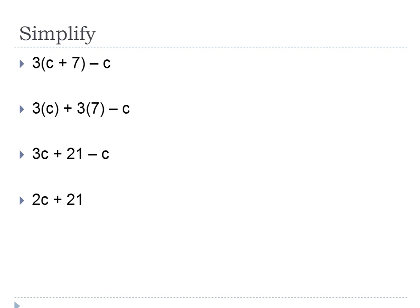You have a problem on your own: three times the quantity C plus 7, minus C. Try using the distributive property. Three times C plus three times seven — since C plus 7 repeats three times — gives 3C plus 21, then minus C. The only like terms are the C's: 3C minus C is three minus one equals two. So the simplest form is 2C plus 21.